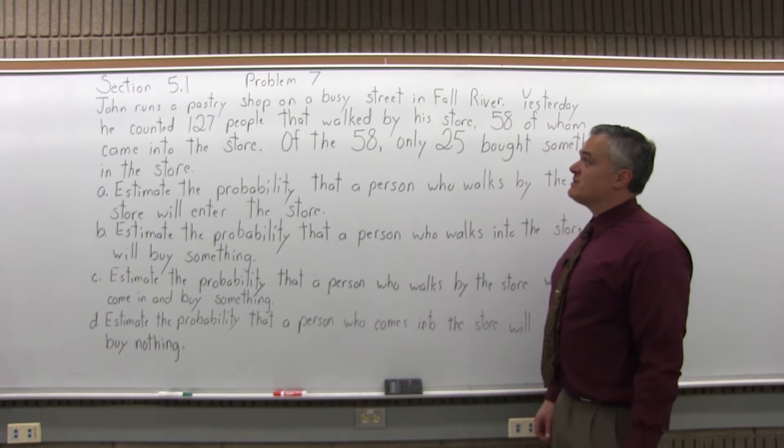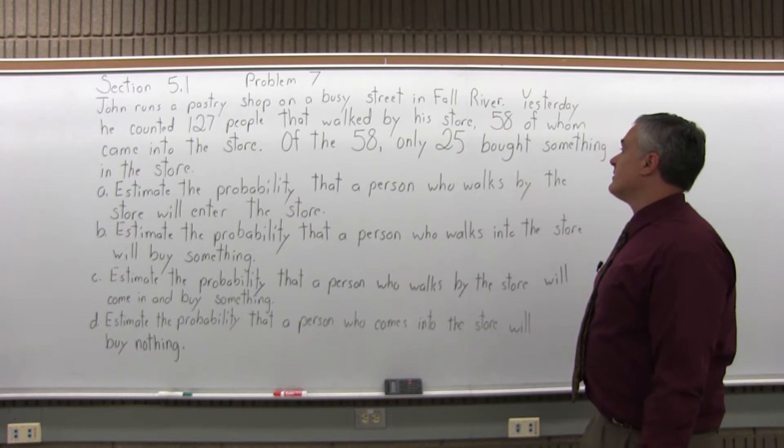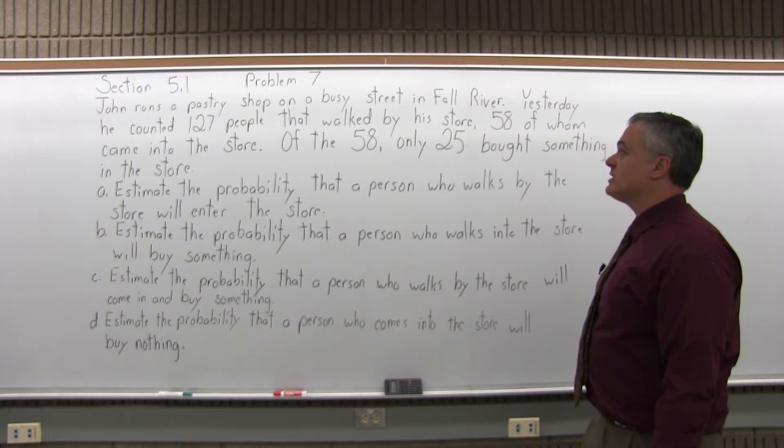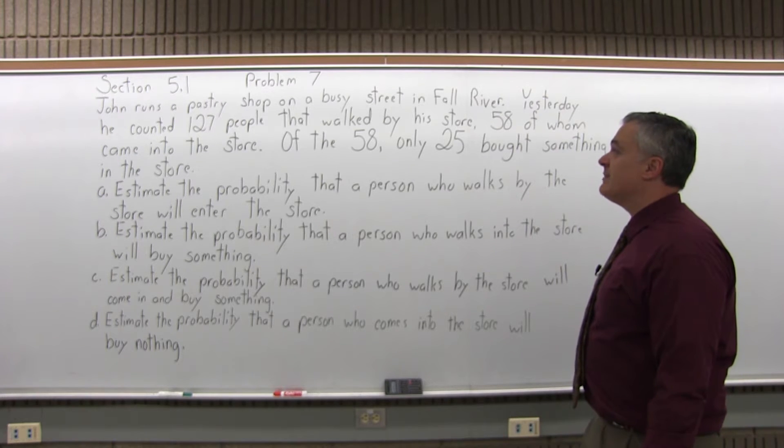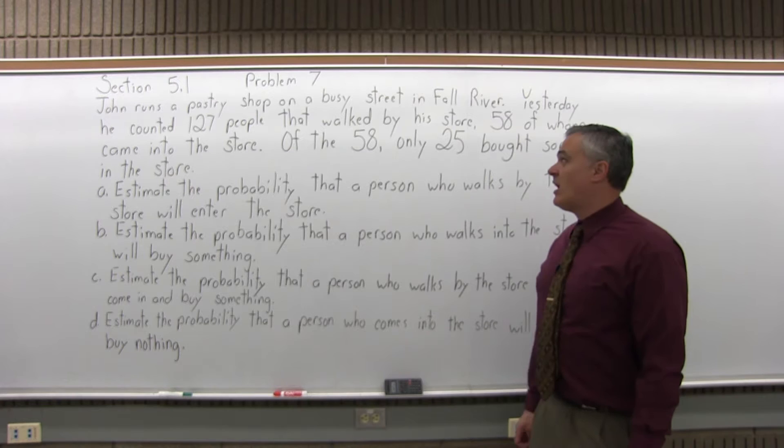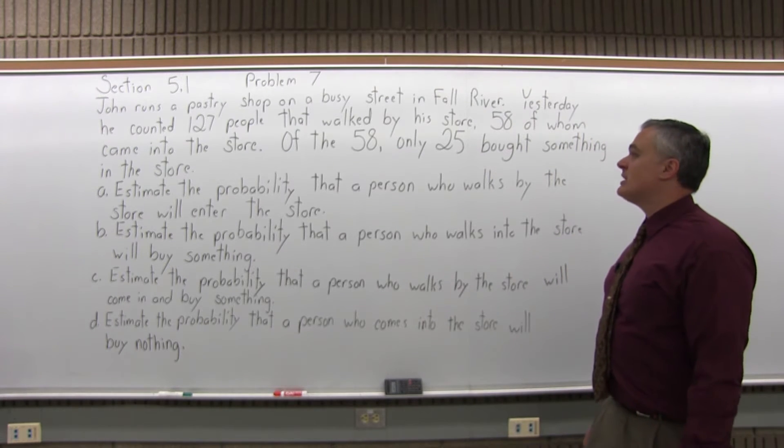John runs a pastry shop on a busy street in Fall River. Yesterday he counted 127 people that walked by his store, 58 of whom came in the store. Of the 58, only 25 bought something.